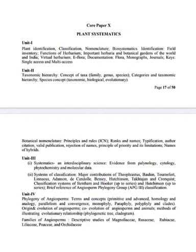Next less important long question: Discuss taxonomic uses of phylogenetic tree and cladogram in the study of plant taxonomies. Next question — very very important: Descriptive studies of angiospermic family. Discuss taxonomic and evolutionary species concepts on the basis of biological and evolutionary species concepts. Next most important long question: Give an account of taxonomic hierarchy with example.